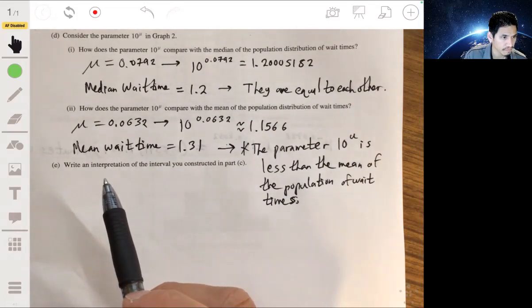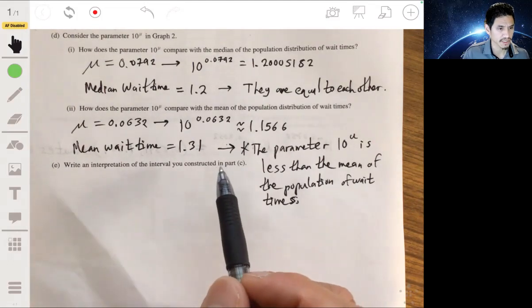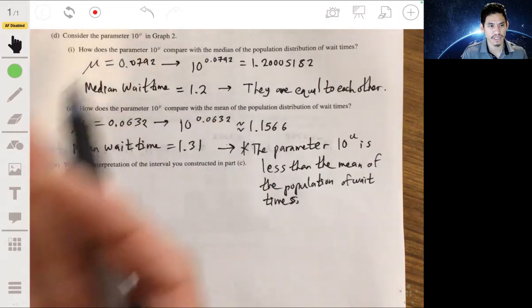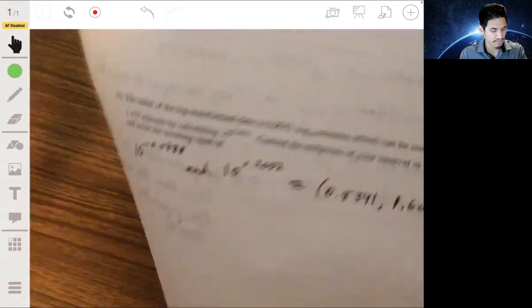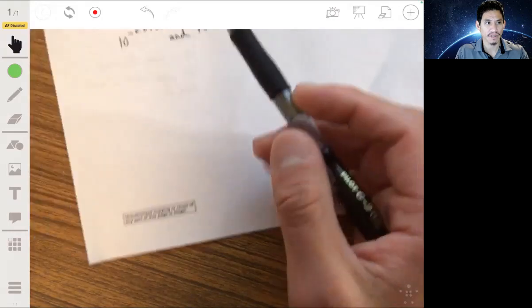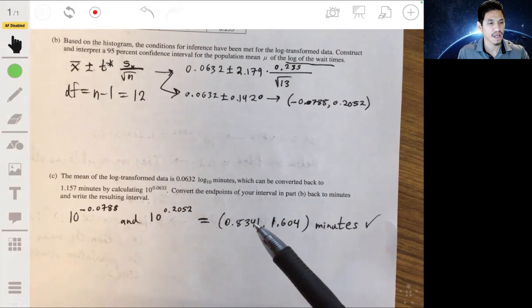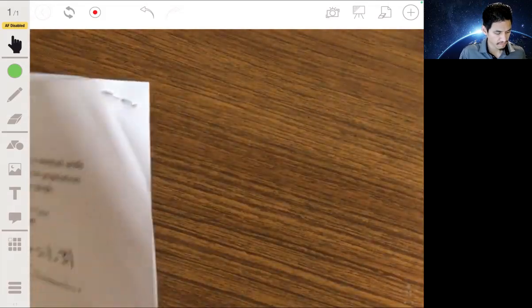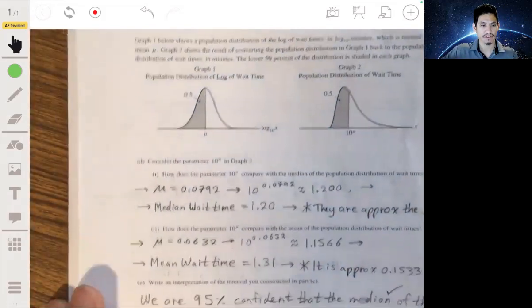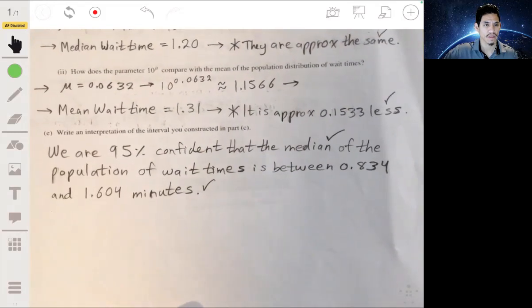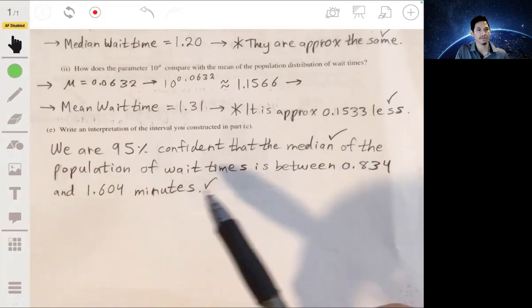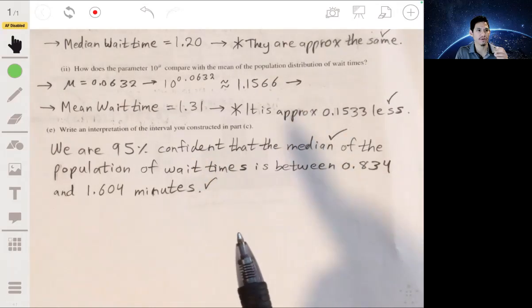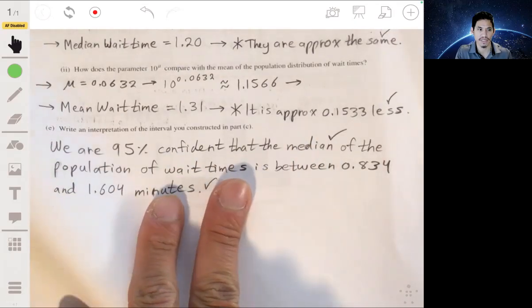Now, part E: Write an interpretation of the interval you constructed in part C. All you really have to make sure that you alter or change from your previous confidence interval is that you're talking about the median of the population of wait times. So we're 95% confident that the median of the population of wait times is between 0.834 and 1.604 minutes. Nothing really tricky there. You're just making sure you know what those values represent—medians versus means.